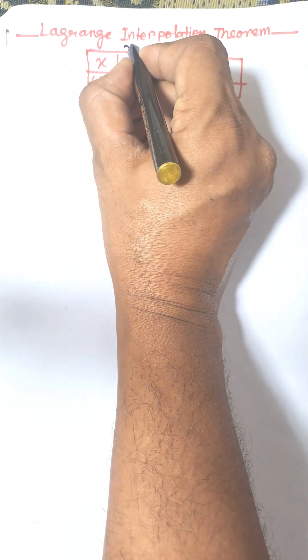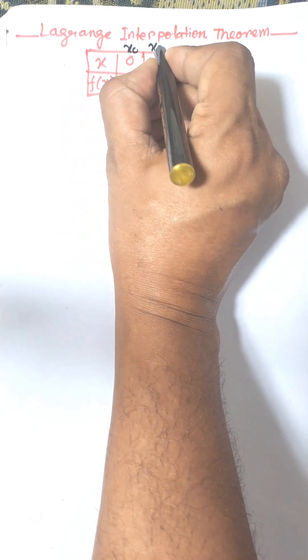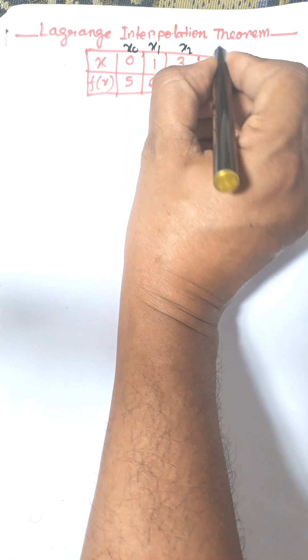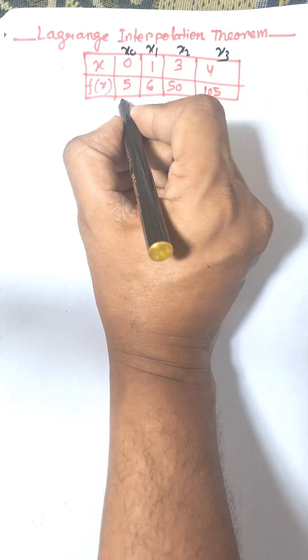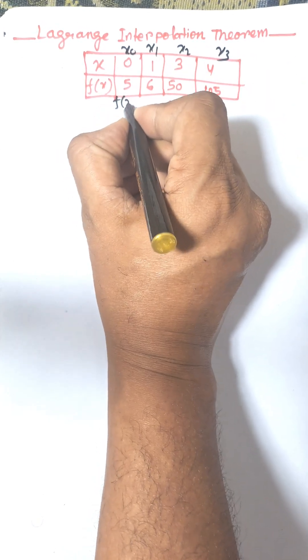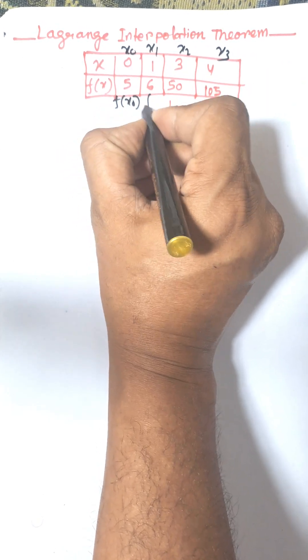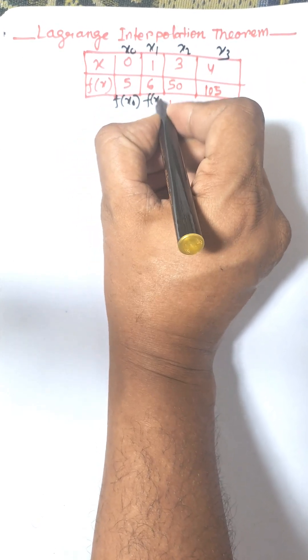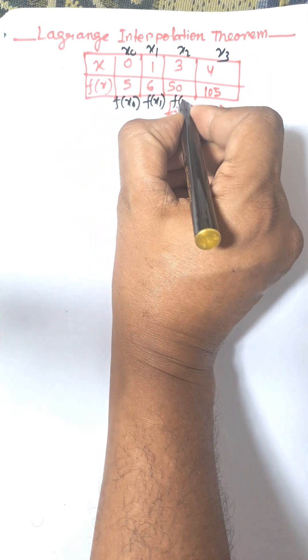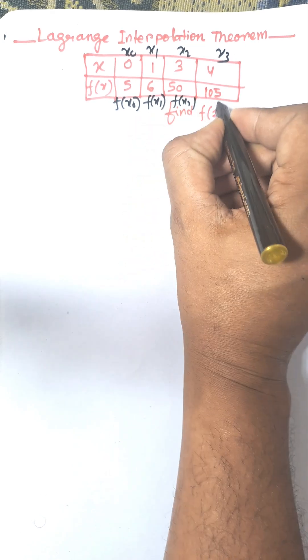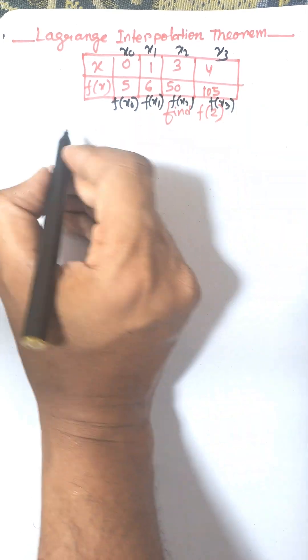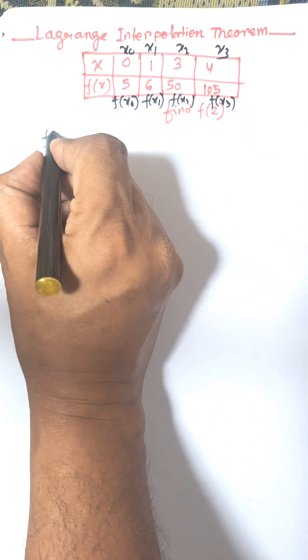Consider these as x0, x1, x2, x3. These are f(x0), f(x1), f(x2), and f(x3). Now we need to find f(x).